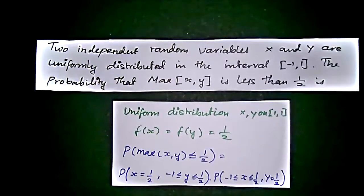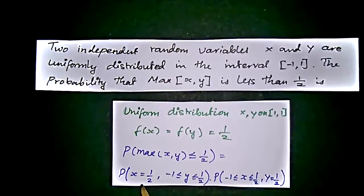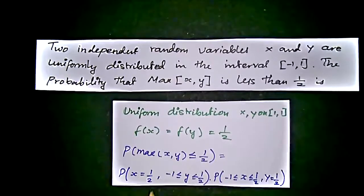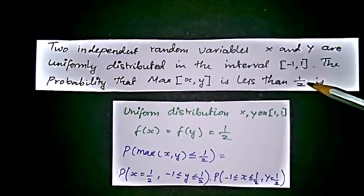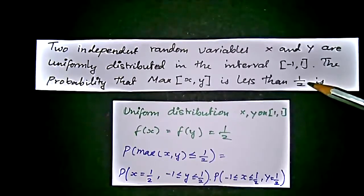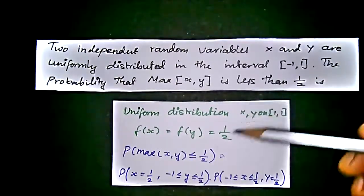Using the uniform distribution, we can say that probability of maximum x comma y which is less than or equal to 1 by 2 equals P of x equal to 1 by 2 comma minus 1 less than or equal to y less than or equal to 1 by 2. In this term, we can see that 1 by 2 is already given in the problem that we should not exceed this number while finding the maximum of x comma y.